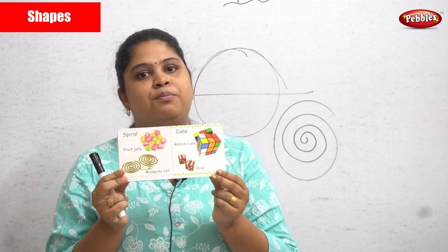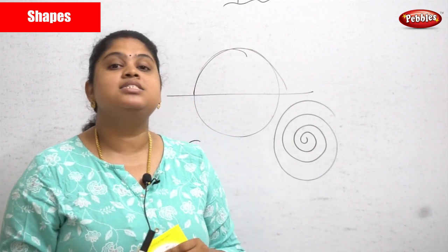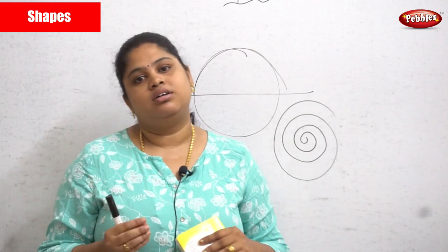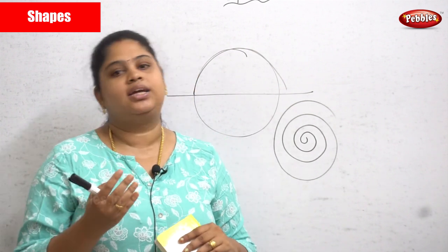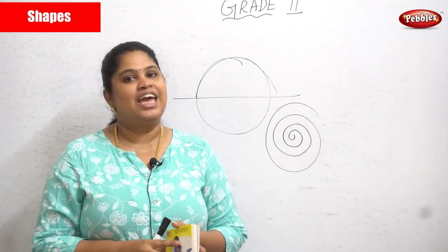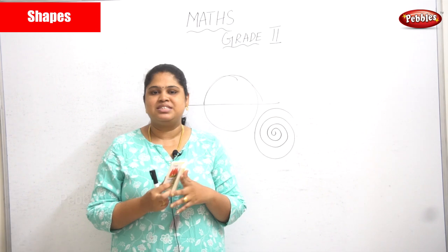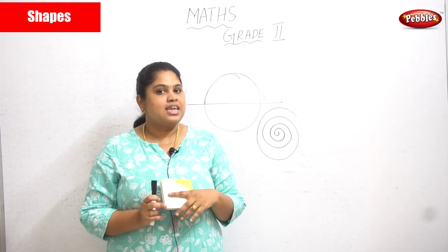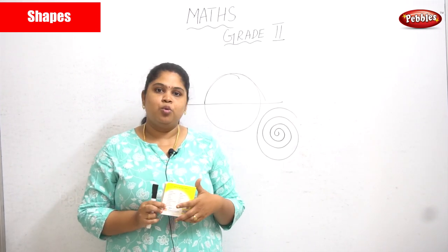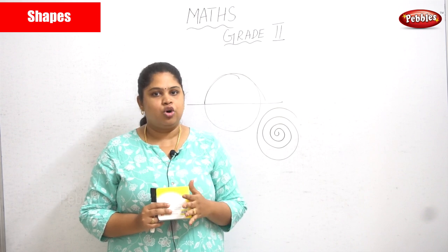Next is the cube. A dice is the best example of a cube shape. These are the shapes we had not learned in earlier classes. I hope you all enjoyed the shapes examples! Next, we are moving on to ascending and descending order.